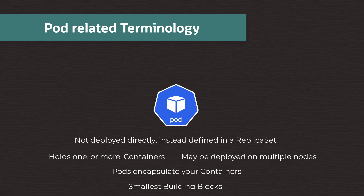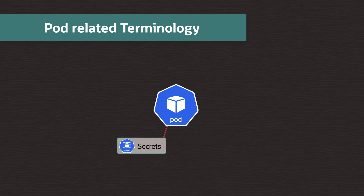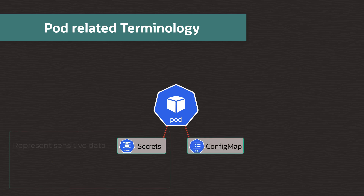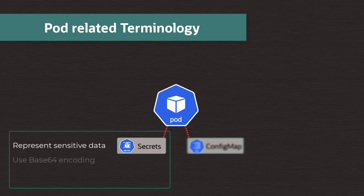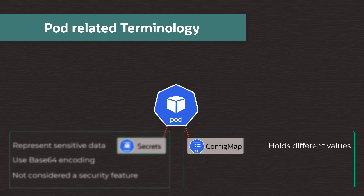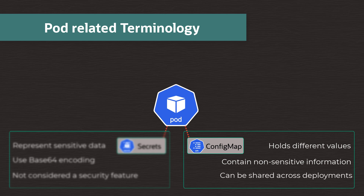The pods themselves very often require extra configuration in order to work correctly, and these are known as secrets and config maps. Secrets represent sensitive data that you want to manage access to. By default they use base64 encoding, so aren't really a security feature — instead they prevent casual observers from accessing this data. The config map is a resource definition that can be loaded into a pod. It can be a key-value pair, a body of text, or even a binary file. Config maps can be application specific, or there can be settings shared across many pods. They are read only, meaning that the pods themselves cannot alter a config map.